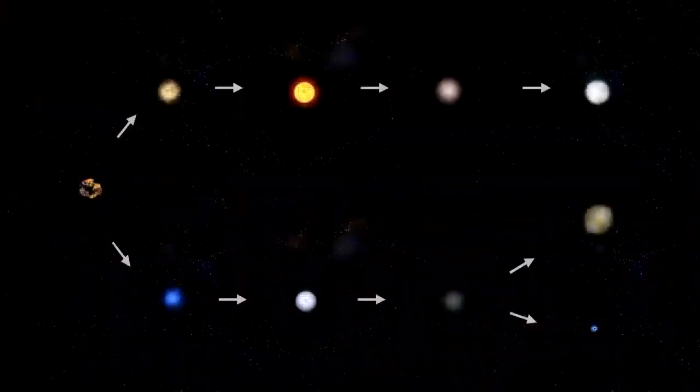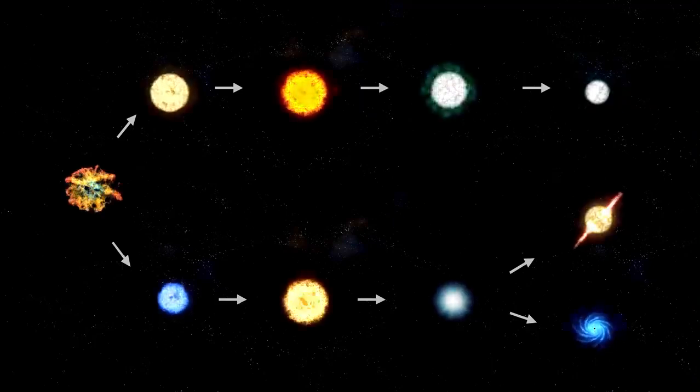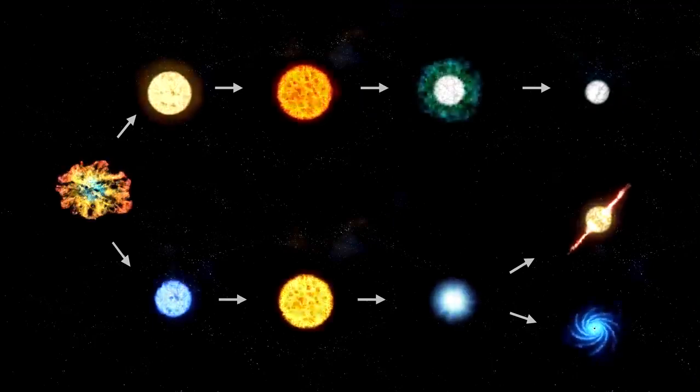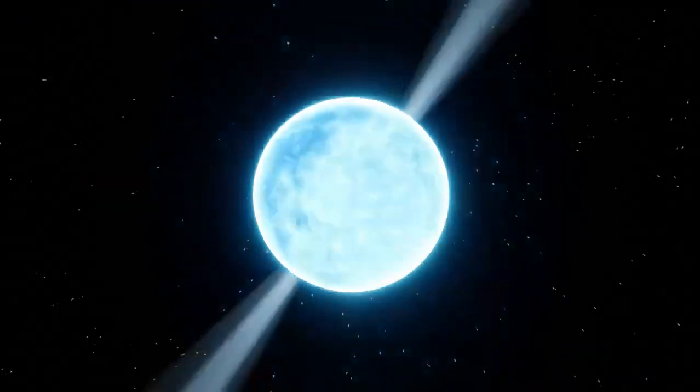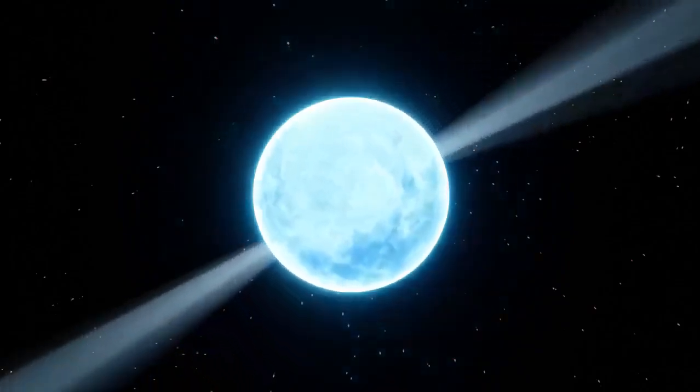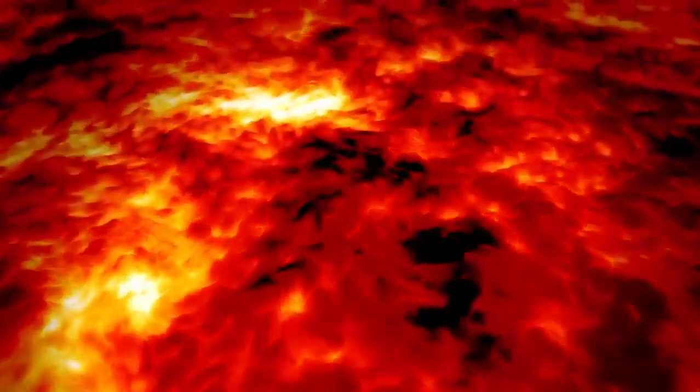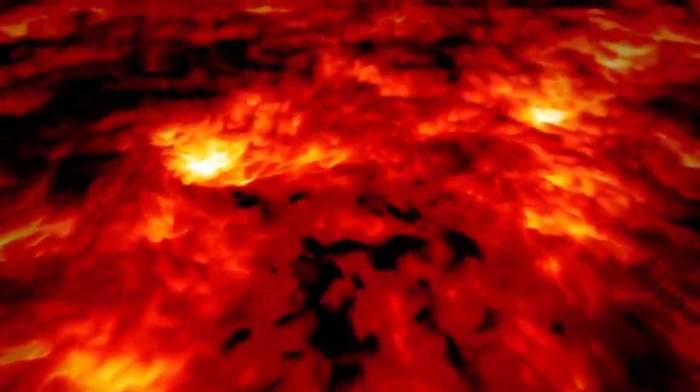One intriguing process within the star is stellar convection, where energy generated in the core rises toward the surface. This movement creates convection currents that transport energy outward, balancing the star's internal processes with its external luminosity. These currents also cause variations in brightness, manifesting as the pulsations observed from Earth.